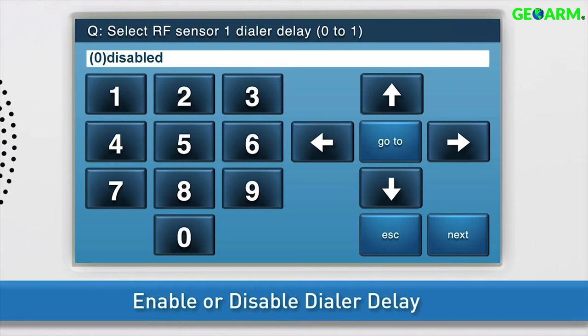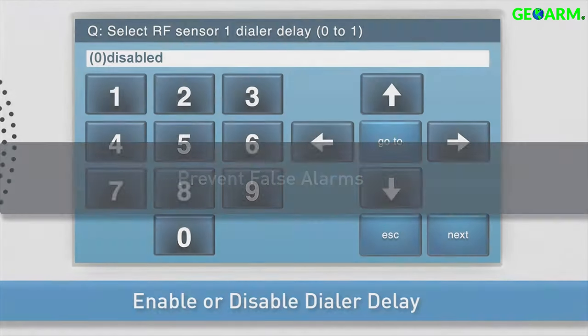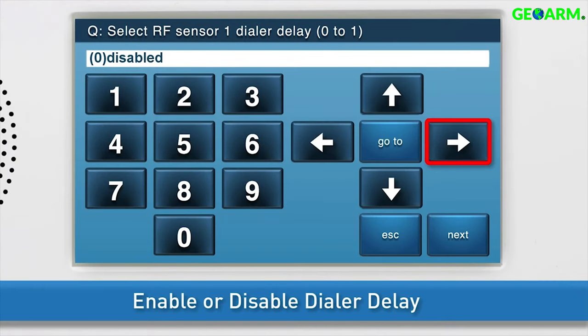Choose whether to enable or disable the dialer delay. The dialer delay is used to help prevent false alarms. To enable the dialer delay, use the right arrow to select option 1. To disable the dialer delay, leave option 0 disabled. Once the desired option displays in the answer box, press the down arrow to go to the next sub-question.